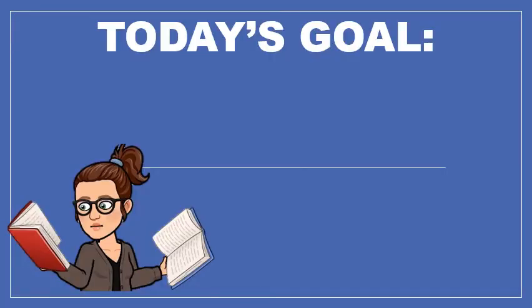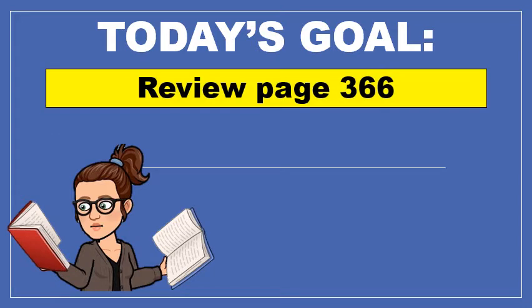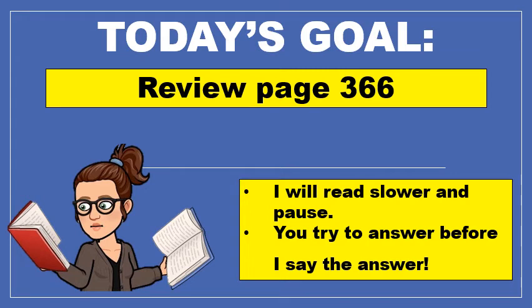I want to talk about what our goal for the lesson is today. It's a little different from past lessons because we're just going to review page 366. I'm going to do something new — I'm going to read slower and pause at the end of sentences. I'd really like you to try to answer before I reveal the correct answer. The correct answer is going to be in blue. If you can answer, that means you have a pretty good understanding of the topic. If you're struggling, you might want to go back and watch lesson 1 and 2 from week 9, or go back and read the textbook.